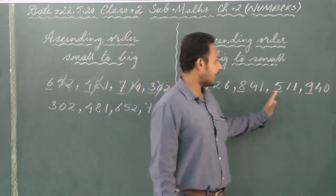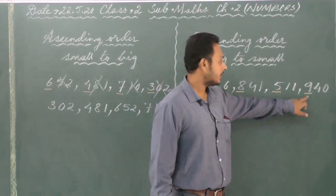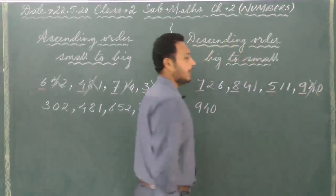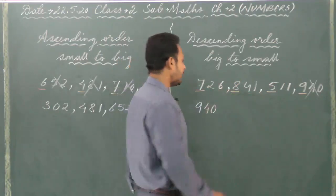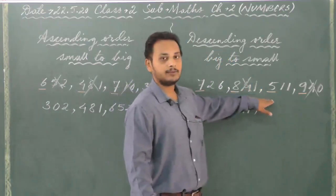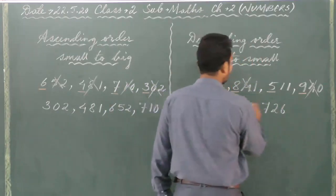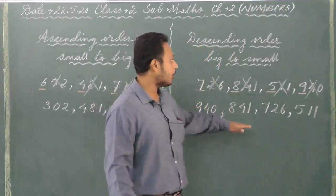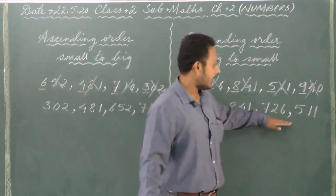We have 7, 8, 5, and 9. We have to arrange from big to small. Which is the biggest number out of 7, 8, 5, and 9? It is 9, so 940 comes first. Then we have three more numbers remaining: 7, 8, and 5. The biggest is 8, that means 841. Then we have 7 and 5 remaining — 7 is bigger so 726 comes next, and the last number remaining is 511. They are arranged from big to small: 940, 841, 726, and then 511.